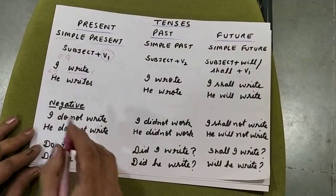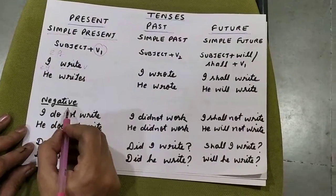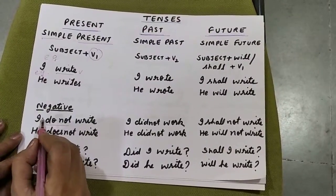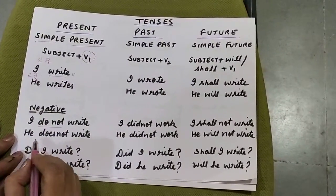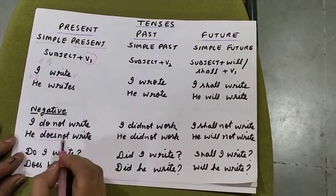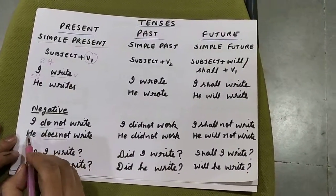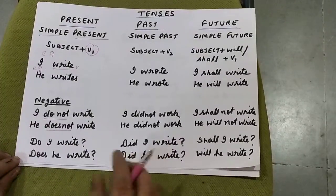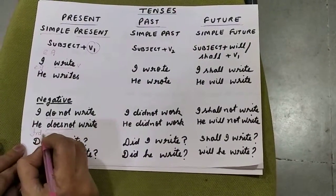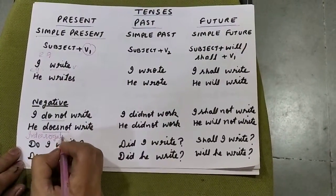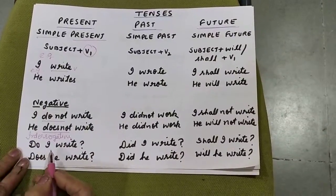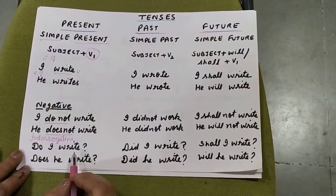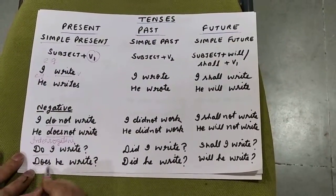Now if we want to write this sentence in a negative form, we need to use 'do not' with I, we, you, they. And with he, she, it, we use 'does not'. So the sentence becomes 'I do not write' or 'he does not write'. And the same sentence if we need to write in interrogative, we will take out the helping verb. So the sentence will become 'do I write?' or 'does he write?'